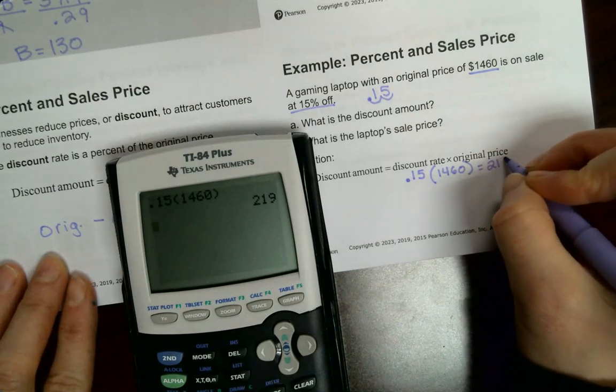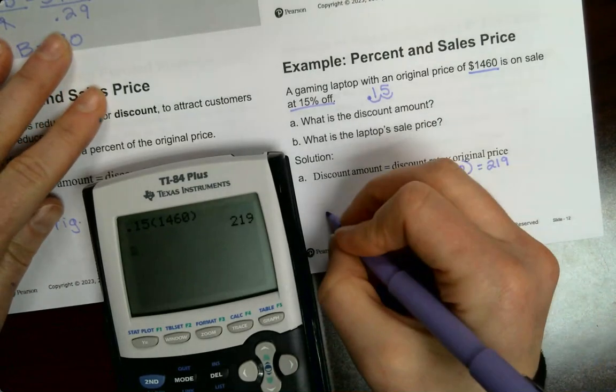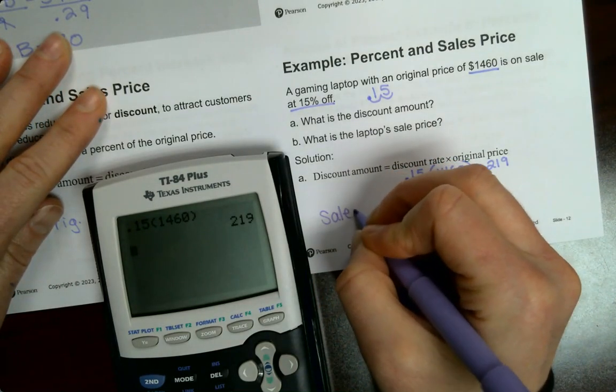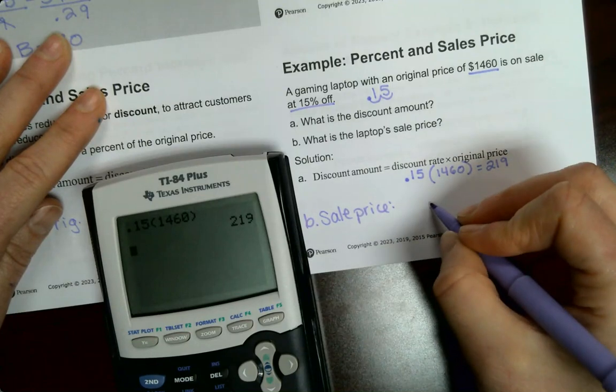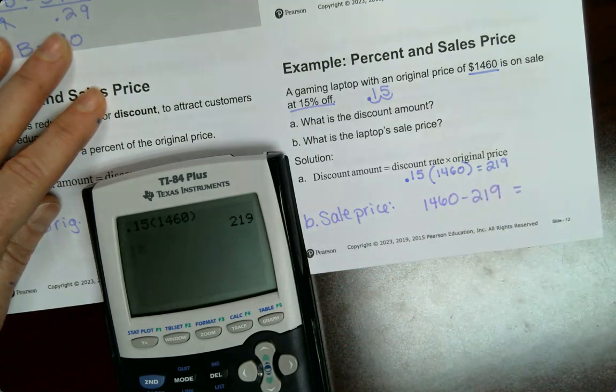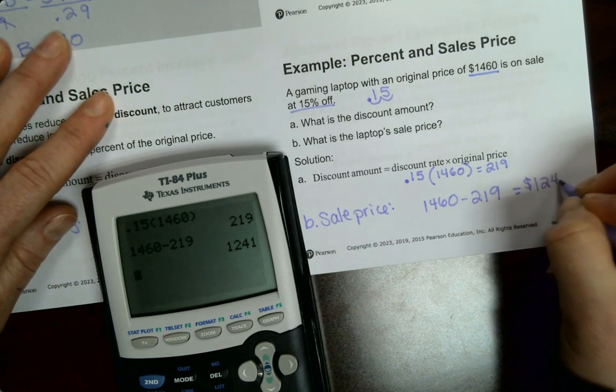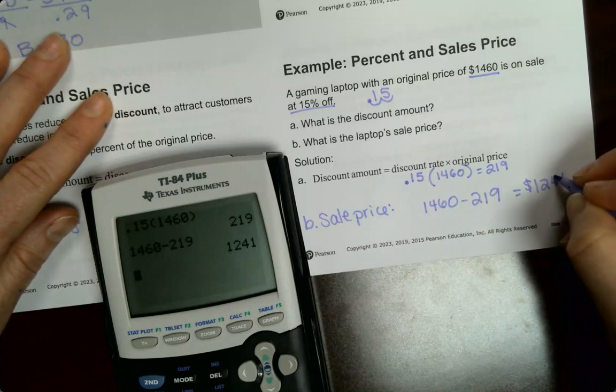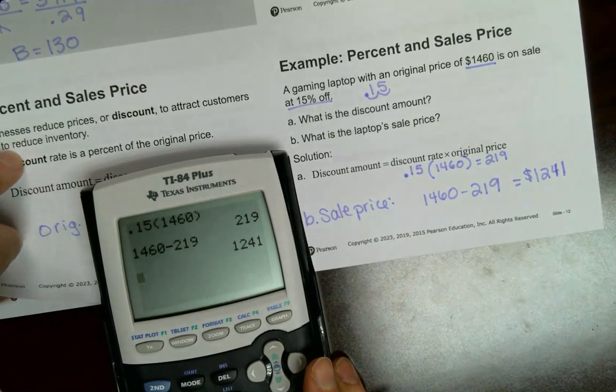And we are going to find out what that discount amount is. It's $219. So that's how much money they're taking off of the price. So now you've got to subtract. So I'm going to find my sale price. Part B. I'm going to do $1,460 minus $219. $1,241.